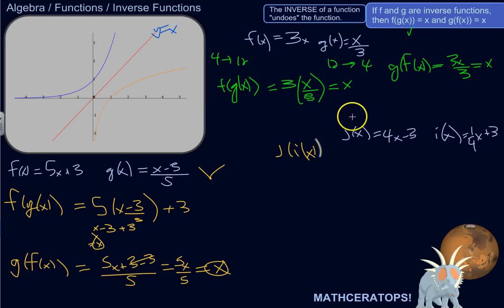j of i of x. And it wouldn't matter if you did y equals 4x minus 3, and y equals 1 fourth x plus 3. It's easier in function notation, because it's easier to see what you're doing, but you could do it. So j of i of x is 4x minus 3, but my x is going to be 1 fourth x plus 3.